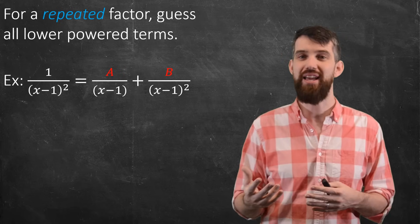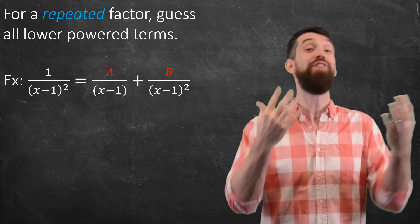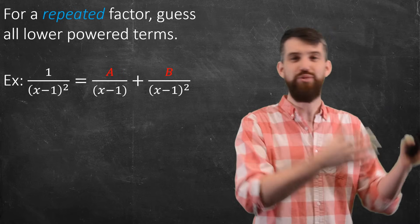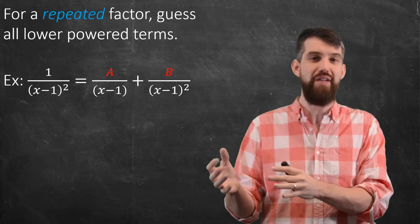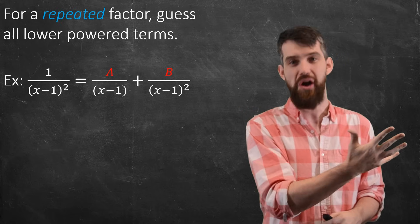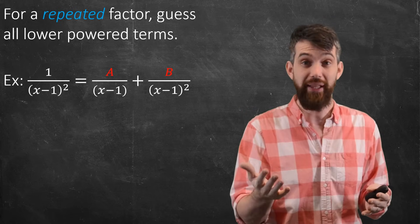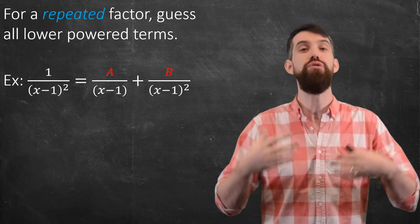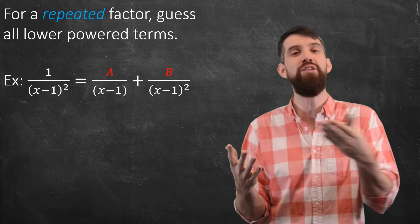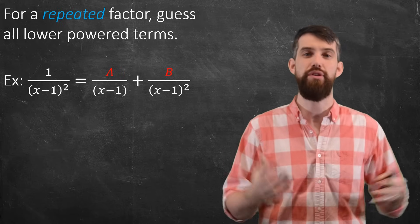If this was higher, say x minus 1 to the power of 5 on the bottom, you'd need x minus 1, x minus 1 squared, all the way up to x minus 1 to the power of 5, with a, b, c, d, and e constants. It can get a little bit complicated, but the basic idea is if you have a repetition, you use the highest power and all of the lower powers—those are the terms you need to add.